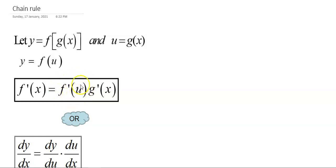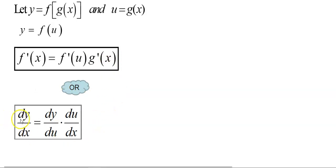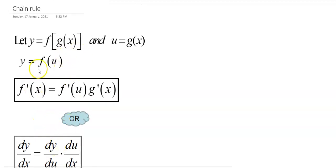Differentiating the f function: you take the derivative of the outer function and keep the inside function — the u function — the same inside. Then multiply by the derivative of the g function in terms of x. You can write this in the form dy/dx equals dy/du multiplied by du/dx, which means differentiating y with respect to u, then multiplying by differentiating u with respect to x, which is the same as finding g'(x).